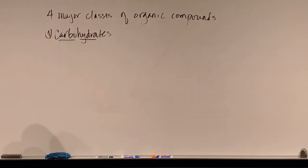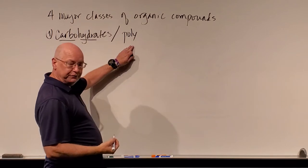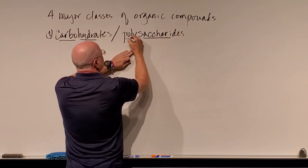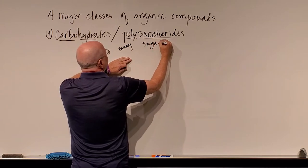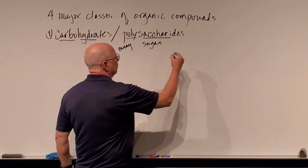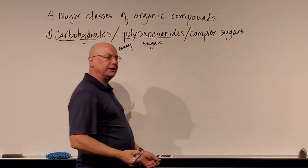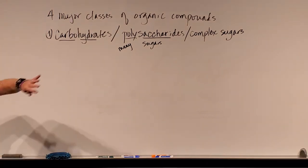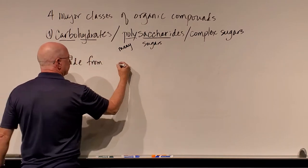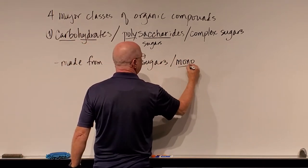Another name for carbohydrates is polysaccharides. 'Poly' is a prefix that means many, and 'sacchar' means sugar — so the name tells you it's many sugars. A carbohydrate is a whole bunch of sugars clumped together. Another name for them is complex sugars. When you hear someone talk about carbohydrates, polysaccharides, or complex sugars, they're talking about the same thing. They are made from simple sugars, also called monosaccharides — 'mono' meaning one.